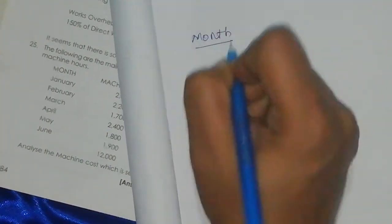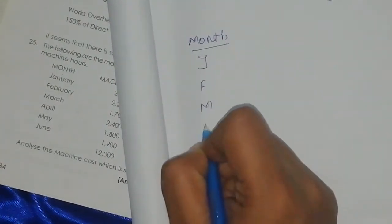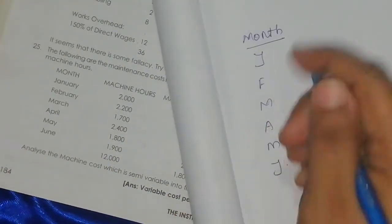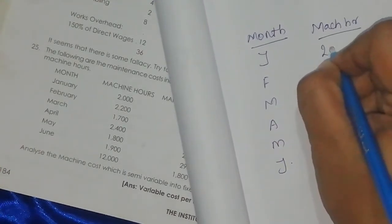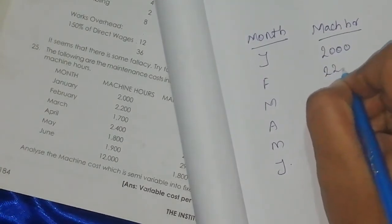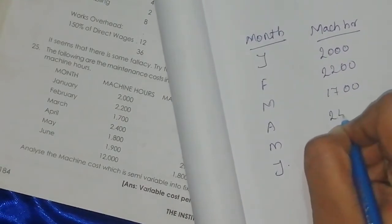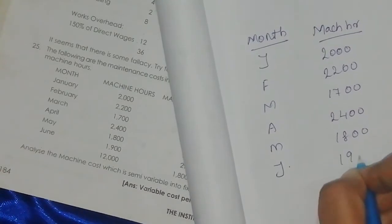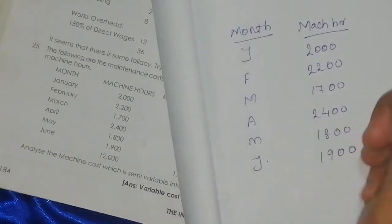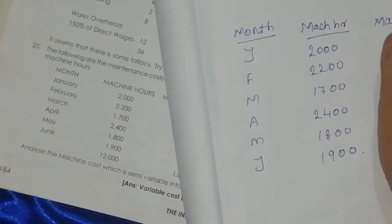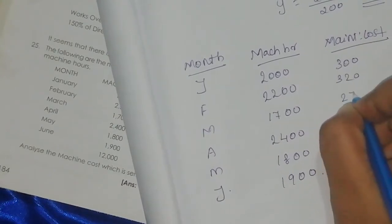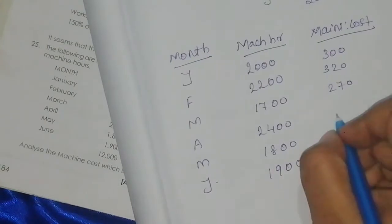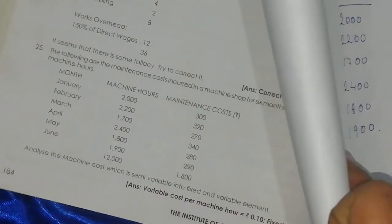The data covers months January, February, March, April, May, June. Maintenance costs are 300, 320, 270, 300, 320, 270, 340, 280, 290.